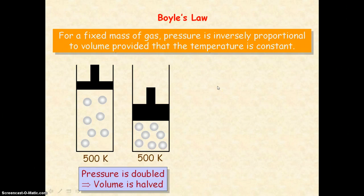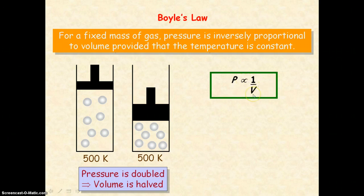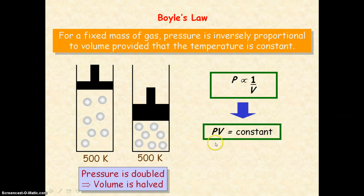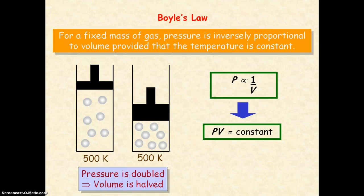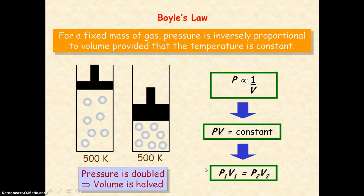We can express this mathematically: the pressure of the gas is proportional to one divided by the volume, or the pressure is inversely proportional to the volume. That means if we take the product of the pressure and volume of the gas, that will equal a constant. So if the pressure changes from P1 to P2, then the volume changes from V1 to V2, and P1V1 will equal P2V2, as both equal the same constant.